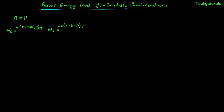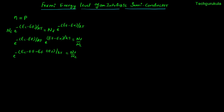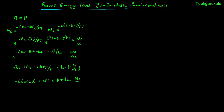If we rewrite this expression, taking exponentials to the left side and Nc, Nv to the right side, we can further rewrite this as e to the power minus of (Ec minus Ef minus Ef plus Ev) over kT, which is equal to Nv over Nc. Taking ln on both sides, we have minus of (Ec plus Ev minus 2Ef) over kT is equal to ln of Nv over Nc.